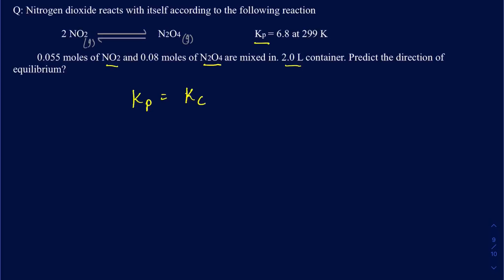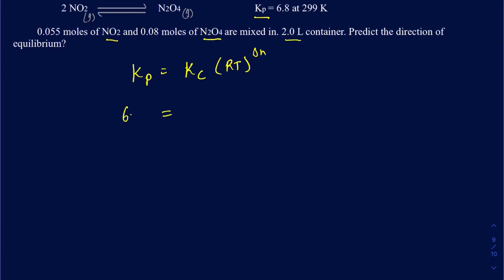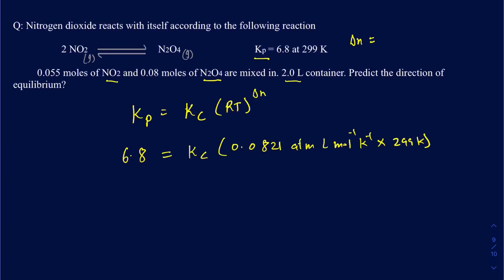Your Kp equals Kc times RT to the power delta N. Your Kp is 6.8. R is 0.0821 atm·L·mol⁻¹·K⁻¹, and your temperature is 299 Kelvin. The delta N in this case is 1 gas mole on the product side minus 2 gas moles on the reactant side, so that's 1 minus 2 equals negative 1. So delta N is minus 1.